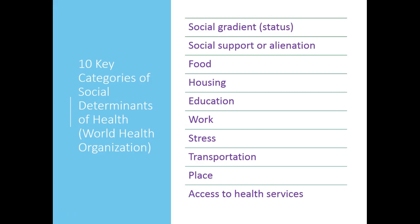The first is the social gradient, sometimes called social status. This is the difference in wealth and opportunity between those with the most and those with the least. We know that societies place value on certain characteristics such that a hierarchical social structure is formed. In the United States, value tends to be placed on income, education, and occupation, which collectively forms socioeconomic status.